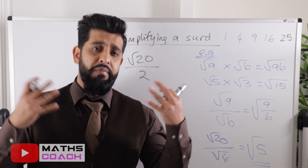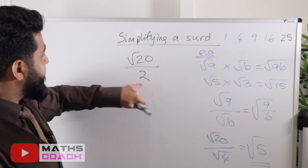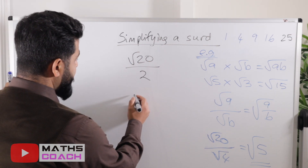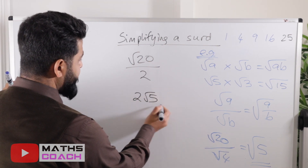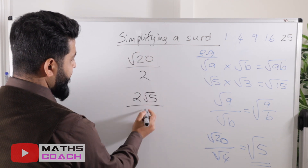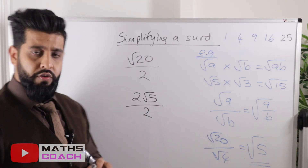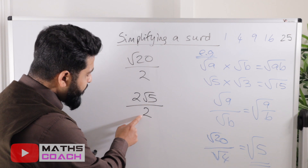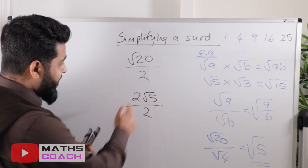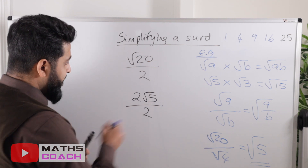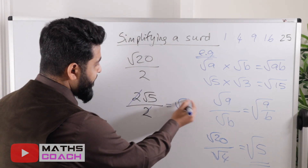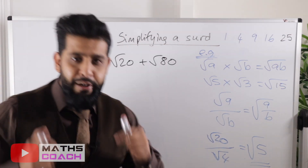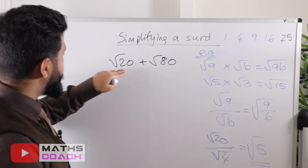Sometimes you may need to simplify at the end. For example, √20 over 2. We've just seen that √20 = 2√5, so we replace √20 with 2√5. Now we have 2√5 over 2. The 2s cancel, giving us √5. So the answer to √20/2 is √5.